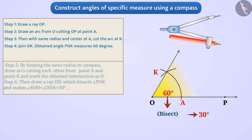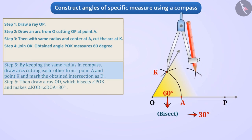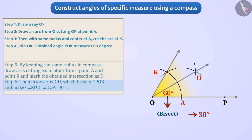Let us see the method. With the above method, we will make angle POK of 60 degrees. We will draw arcs cutting each other from A and K by keeping the same distance in the compass, and name the intersection point D. Drawing ray OD divides angle POK into two equal parts — angle KOD and angle DOA — each measuring 60 degrees divided by 2, which equals 30 degrees.